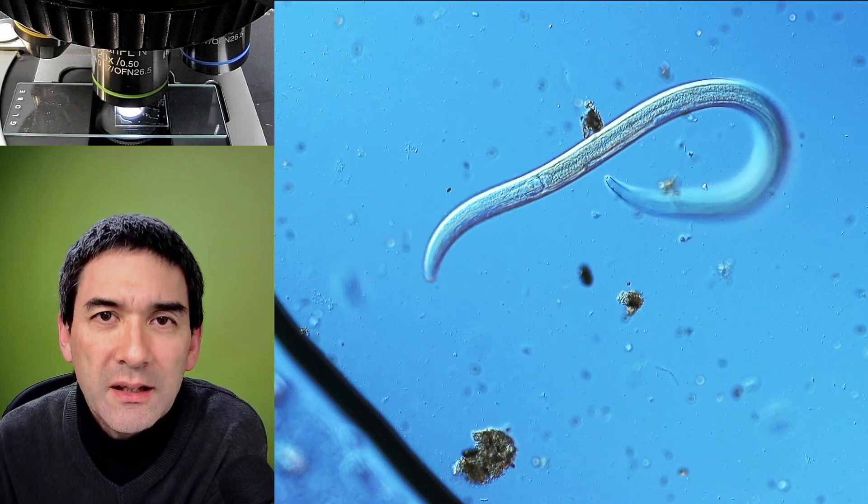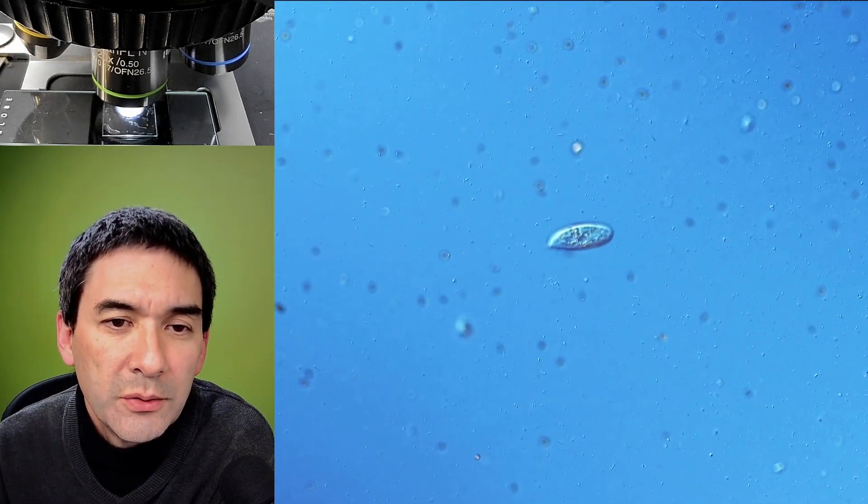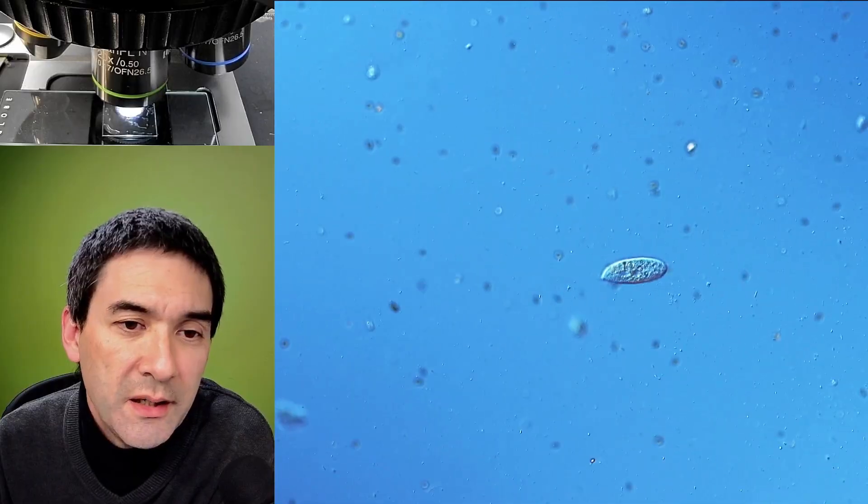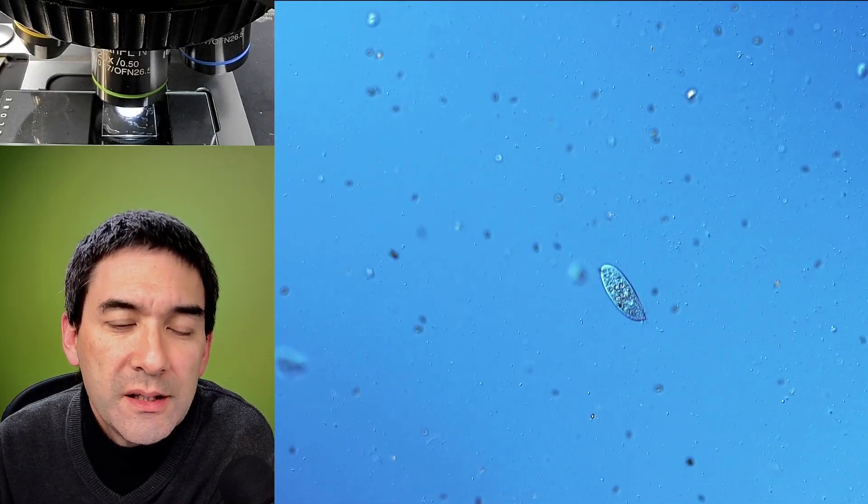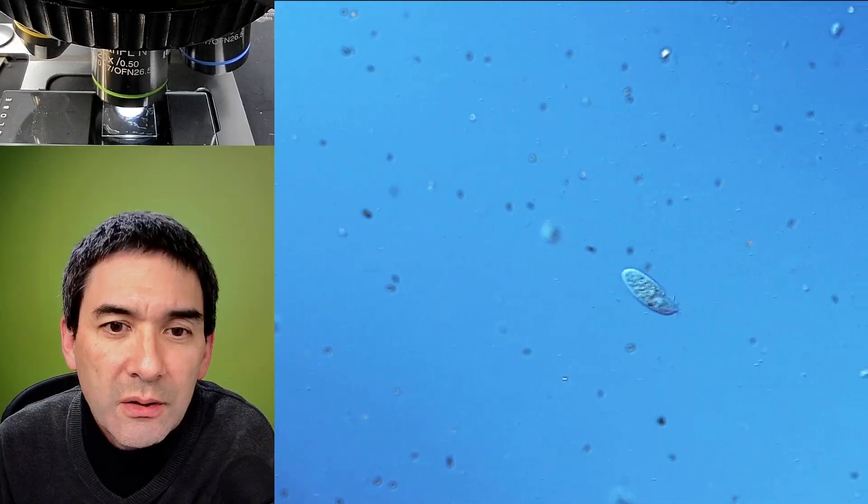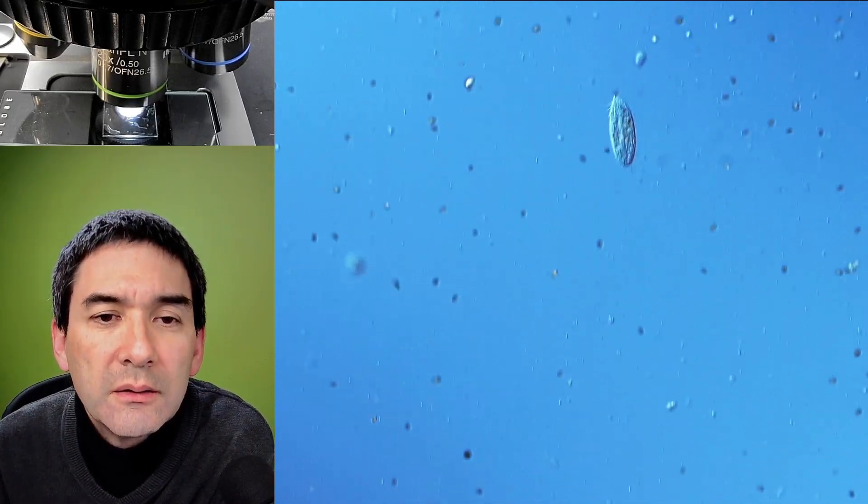So, let's have a look at something else. Yeah, this one over here is some ciliate, not a paramecium, I probably would say. It looks a little too small for that. But in any case, it's a ciliate because it has all of these tiny little hairs all around the cell.